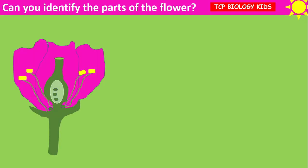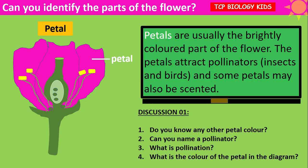Can you identify the parts of a flower and tell about their function? A was the petal. Petals are usually brightly colored parts of a flower. The petals attract pollinators like insects and birds, and some petals may also be scented. Discussion questions for this lesson: Do you know any other petal colors? Can you name a pollinator? What is pollination? What is the color of a petal in the diagram?